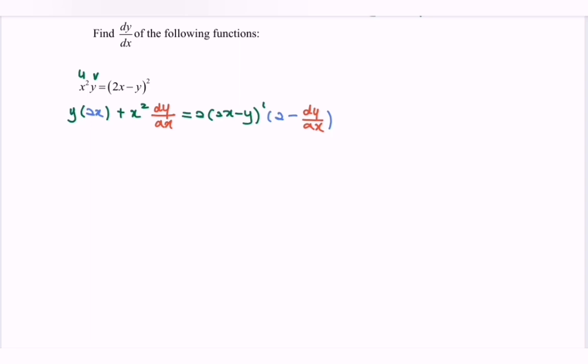Can you focus on the dy/dx? So we have 2xy plus x² dy/dx. Equal, so we have 4x minus 2y. Then we have 2 minus dy/dx.